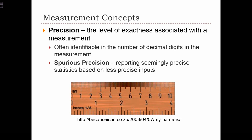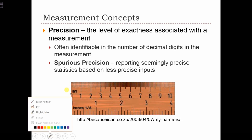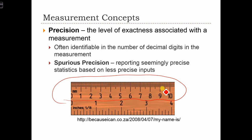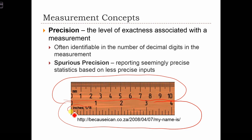The first concept is precision — the level of exactness associated with the measurement. Typically, precision is identified by the number of decimal digits in our measurement. If I had a very precise meter stick, I might be able to give you a measurement to the closest millimeter, as in the case of the top measurement scale. Using the instrument down below, I can only be as precise as the closest eighth of an inch.